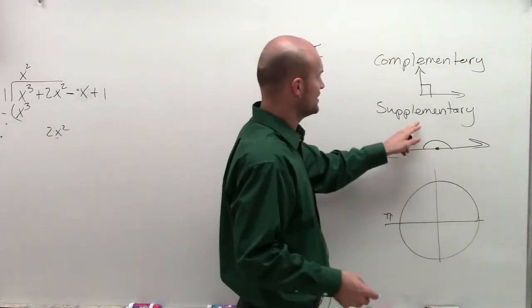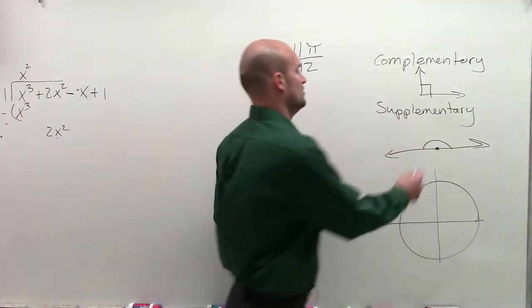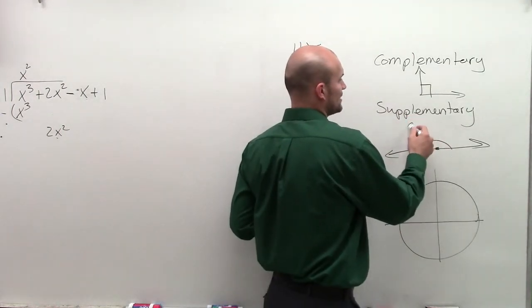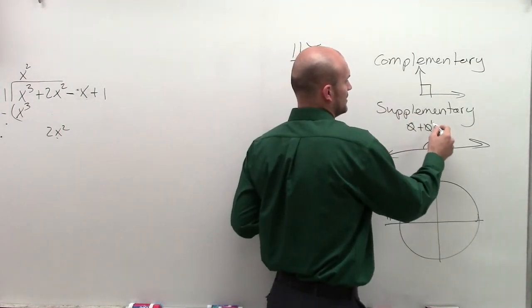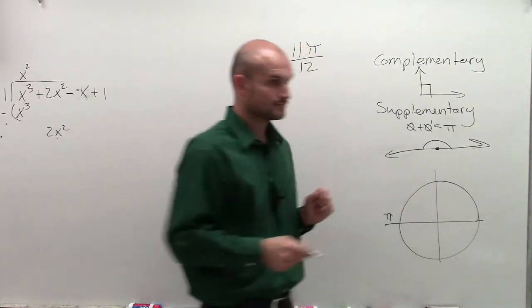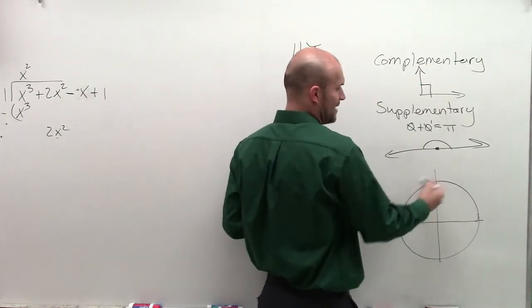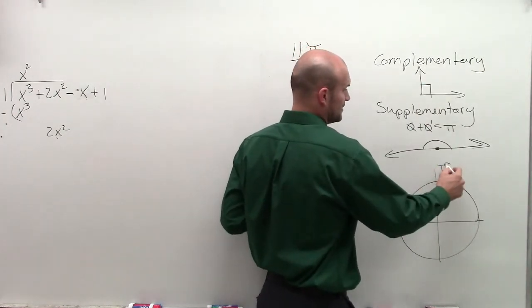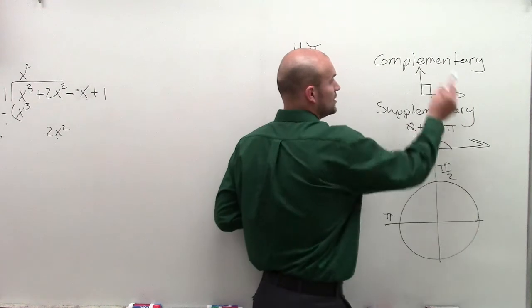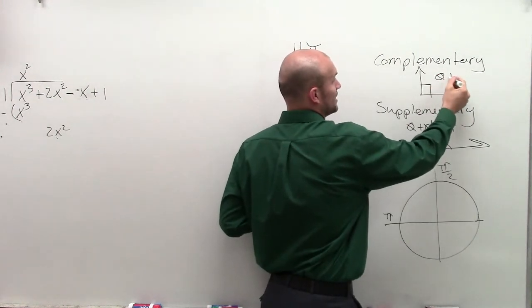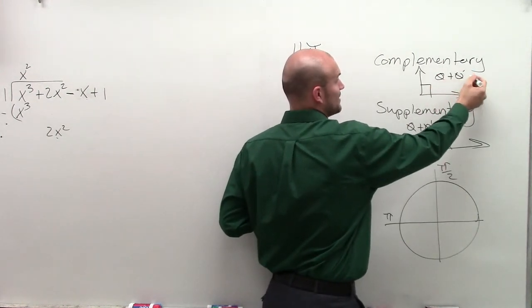So essentially, supplementary means you're going to have two angles, theta plus theta prime equals pi. And then for a complementary, halfway between 0 and pi would be pi divided by 2. So complementary would be theta plus theta prime, these are my two angles, equals pi over 2.